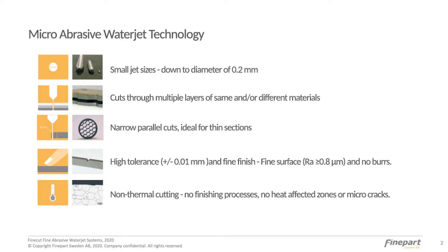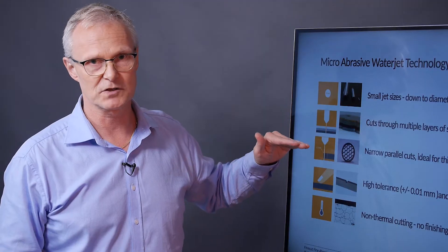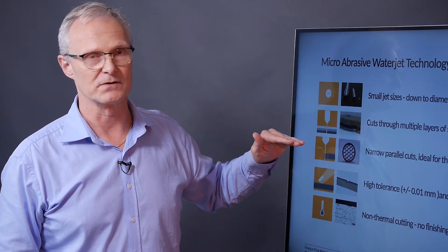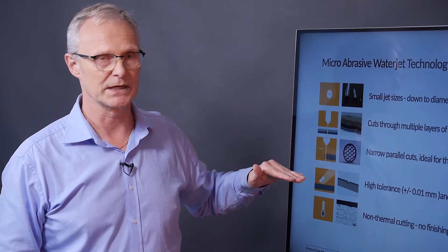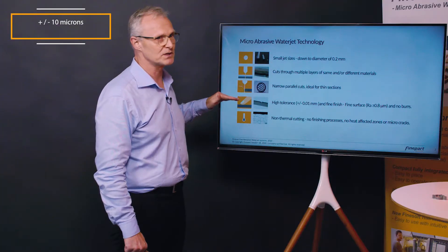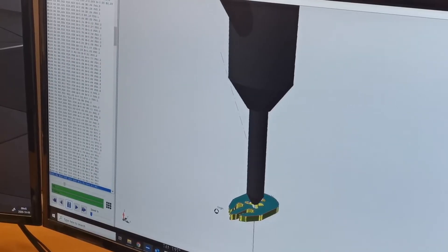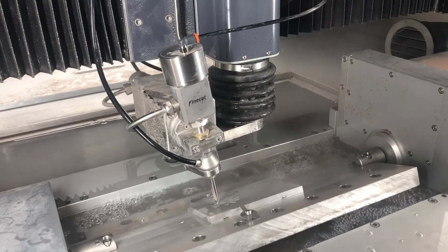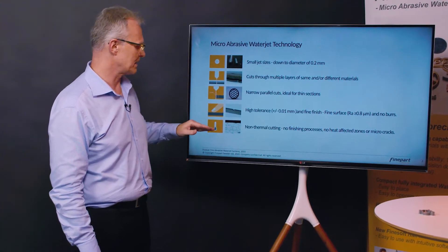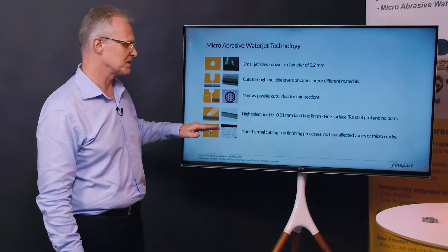Since the process has a very low cutting force we can cut very delicate thin sections. We can cut down to approximately 100 microns in cut width. The process gives very high tolerances. We can achieve down to approximately plus minus 10 microns in tolerances and we can achieve excellent surface finish below one micrometer in RA value. And we have the non-thermal cutting advantage. We do not need any finishing process to remove recast layers or remove heat affected zones. So we will have the same material properties from the core and out to the surface.